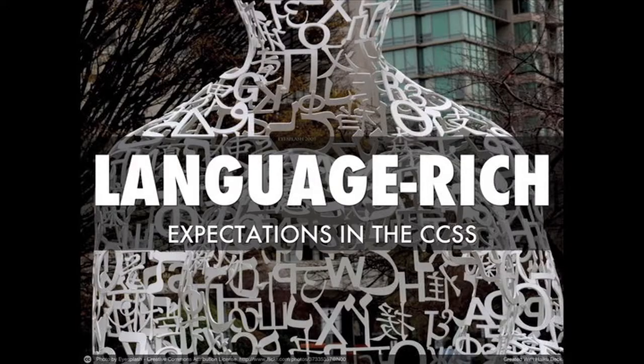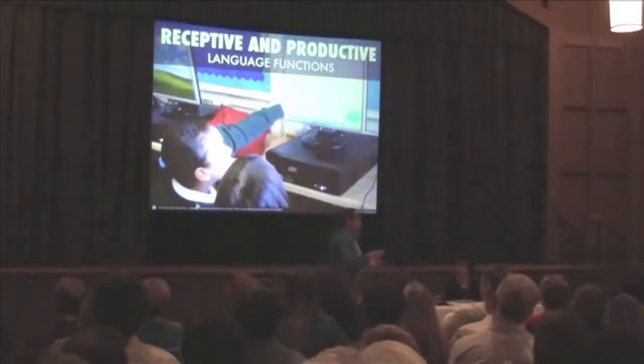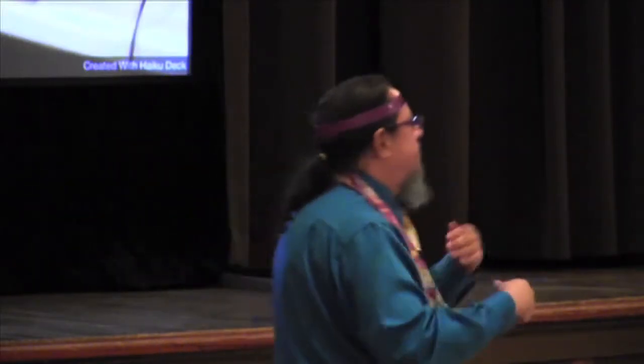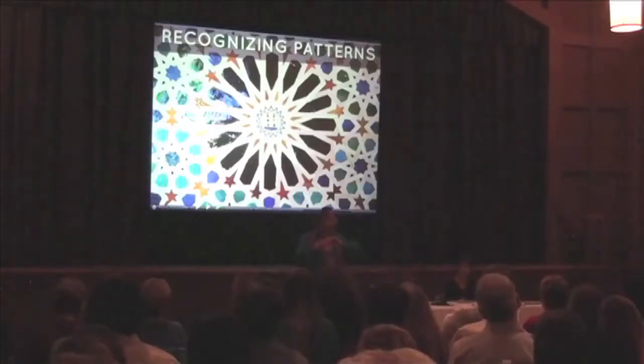All of these functions are language-rich functions that the Common Core Standards expect of all of our students. We have to keep thinking about how do we support them in creating that language-rich environment in which they have to communicate their thinking and their reasoning. We need to help them with receptive and productive language functions — receptive meaning giving them access to the mathematics, comprehending the text they are reading, and productive meaning ways to produce language in which they can communicate what they are thinking.